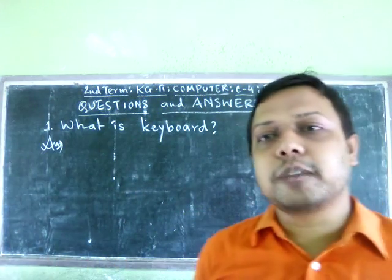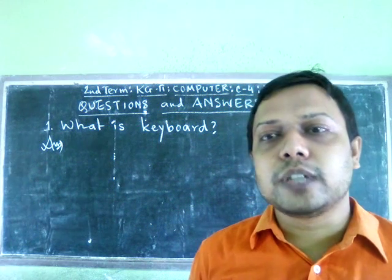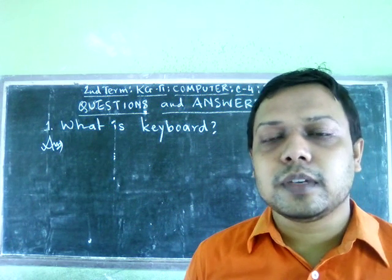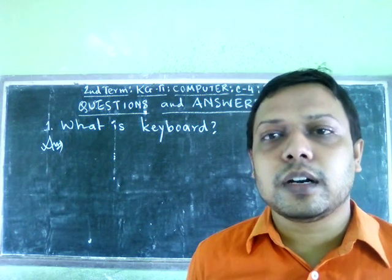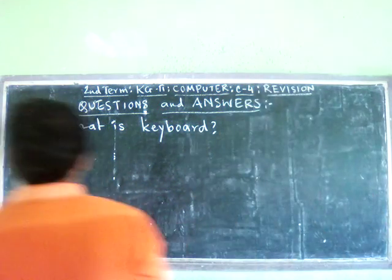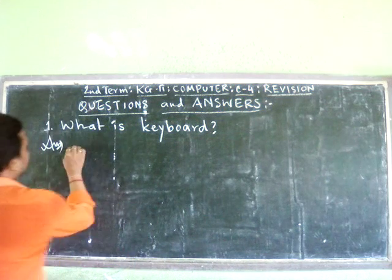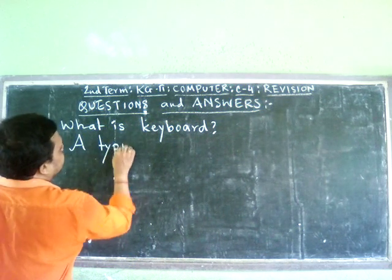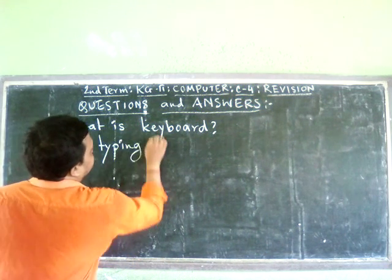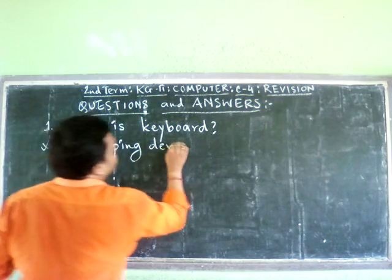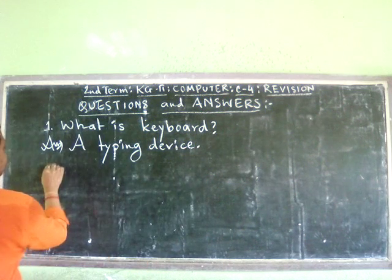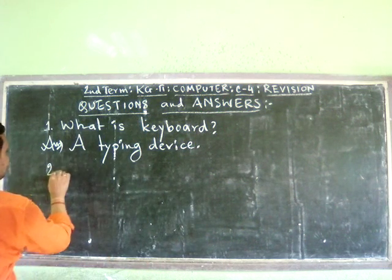We all know that a keyboard gives us the ability to type something — our name, our number, anything. So, what is a keyboard? A keyboard is a typing device or machine. Now, number two.